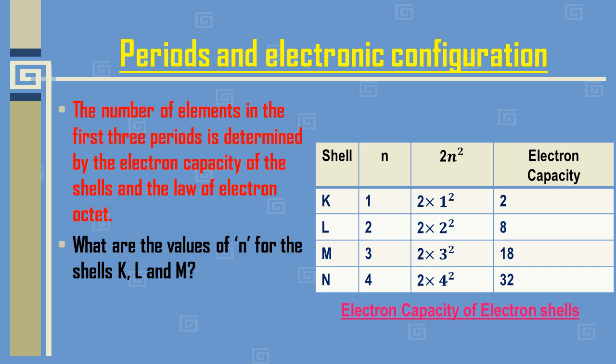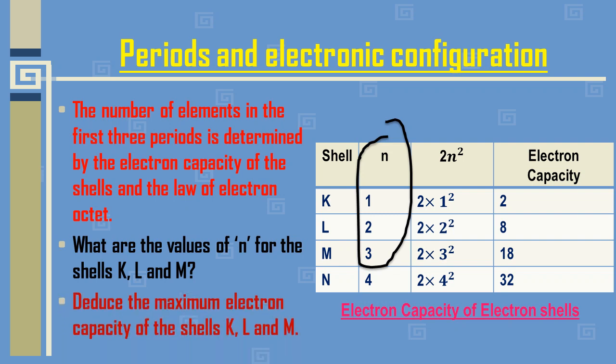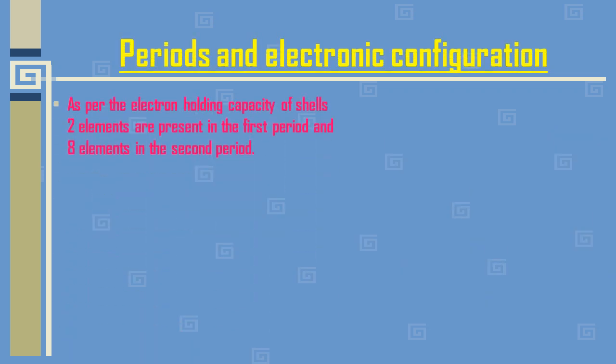For the shells K, L, and M, the values of n are 1, 2, and 3 respectively. The maximum electron capacity of the K shell is 2, the L shell can hold 8 electrons, M can contain 18 electrons, and N (the fourth shell) can contain 32 electrons. The formula to calculate maximum electron capacity is 2n².